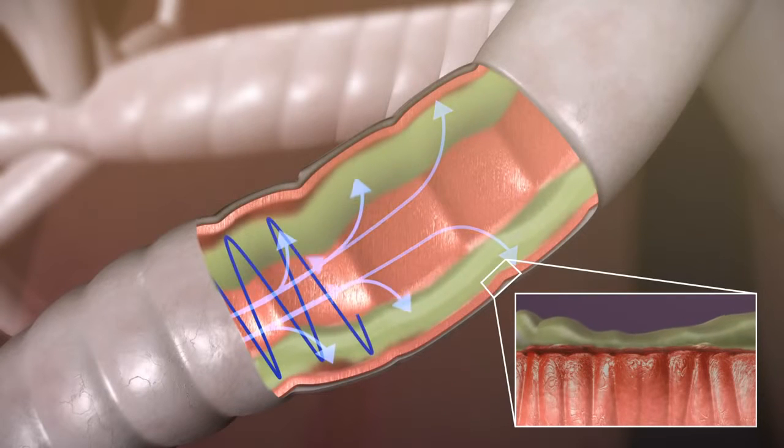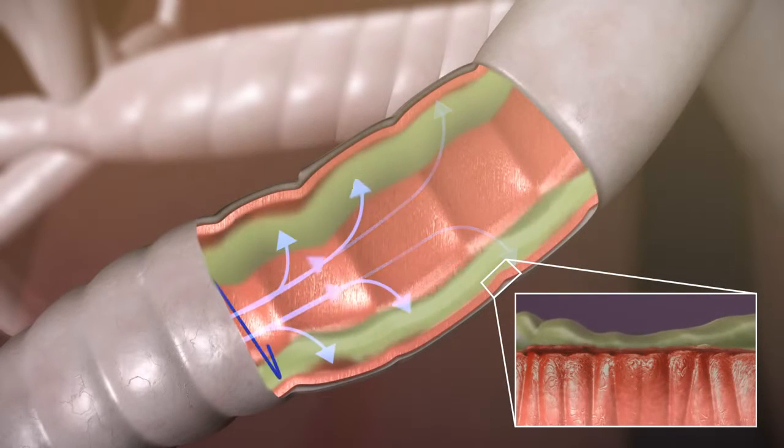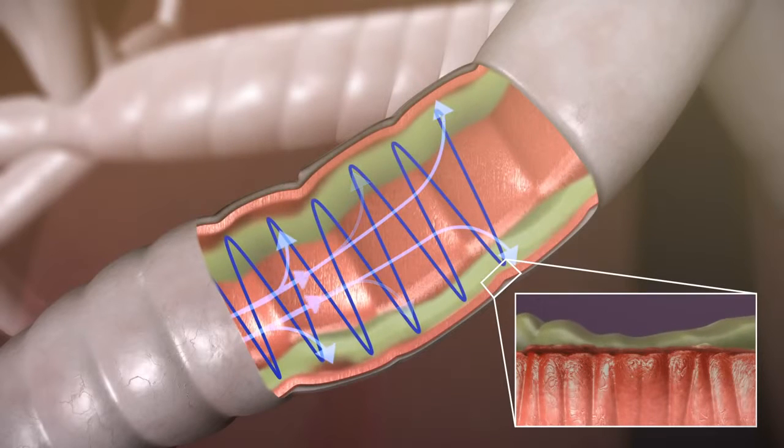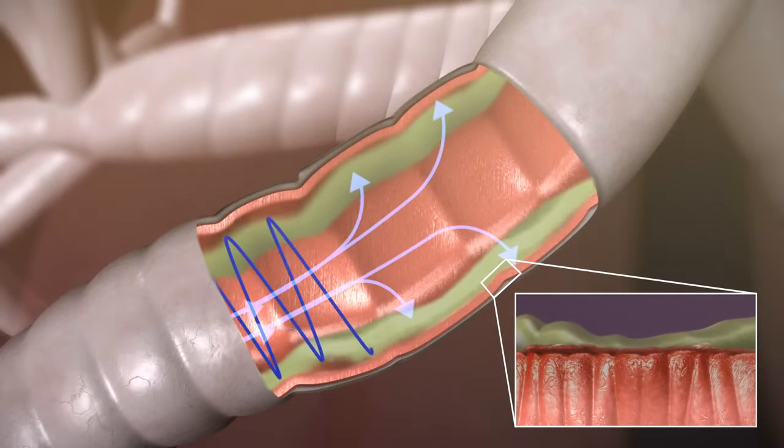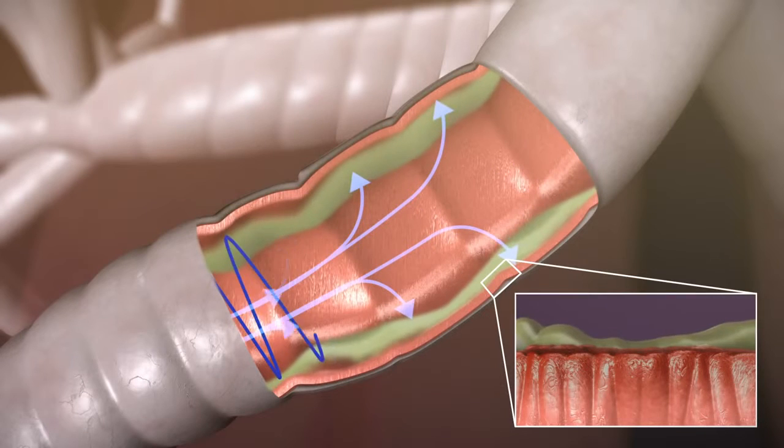At the same time, the pulses, or oscillations, create vibrations within the airways, helping to thin and shake loose mucus which may be too thick or sticky for the pressure alone to move.